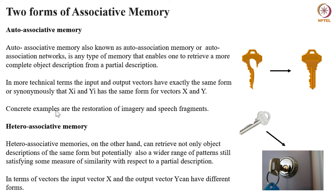Concrete examples of auto-associative memory include the restoration of imagery or the restoration of speech fragments. The other category is called hetero-associative memory. Here one can retrieve not only an object description in the same form, but potentially a wider range of patterns satisfying some measure of similarity with respect to a partial description. In terms of vectors, the input vector X and output vector Y can have very different forms. For example, given a key as input, one can retrieve the full situation around the application of that key — a door and lock where the key is supplied.